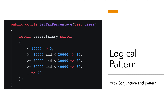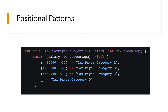Next is the logical pattern with conjunctive and patterns. Here we return user.salary switch: if salary is less than 10,000 return zero; if salary is greater than or equal to 10,000 AND less than 20,000 return 10; if greater than or equal to 20,000 AND less than 30,000 return 20. This is the conjunctive and pattern for matching within switch expressions.